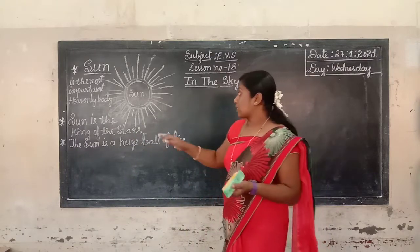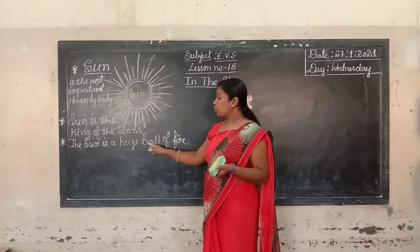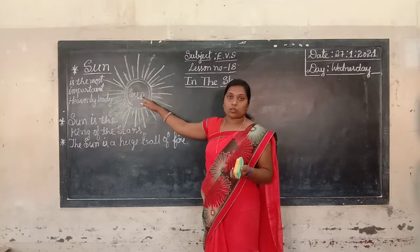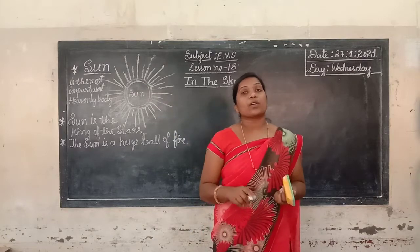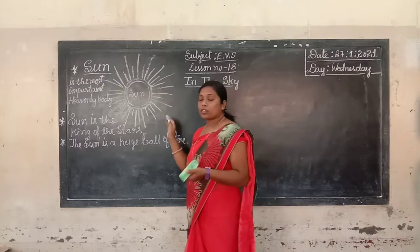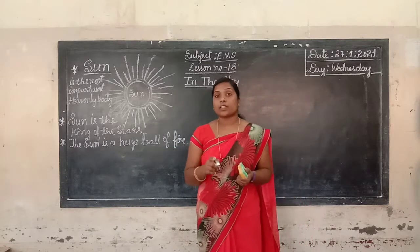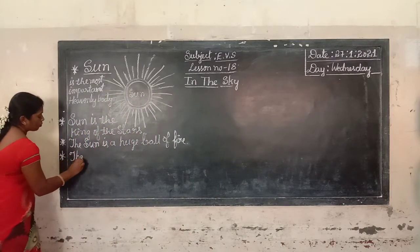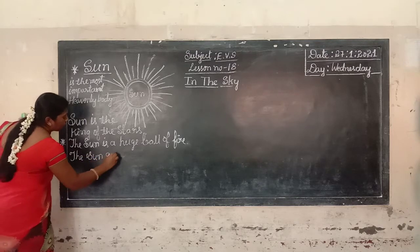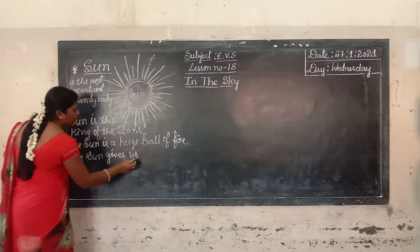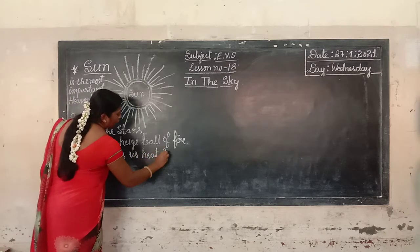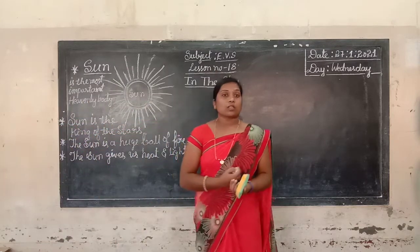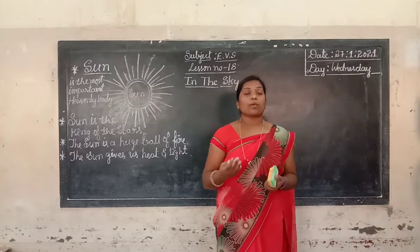The sun is full of burning gases. It has a full of burning gases. So children, the sun gives us heat and light. What does the sun give us? The sun gives us heat and light.